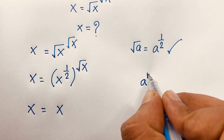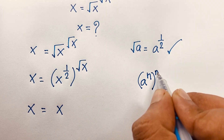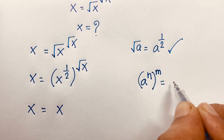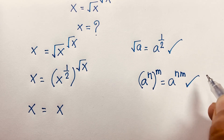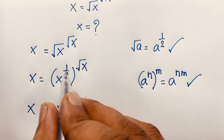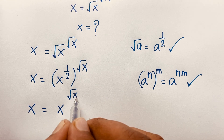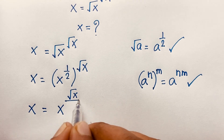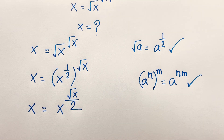We know that a to the power n, whole to the power m, is equal to a to the power nm. According to this law, you can see this expression: 1 over 2 times square root x gives square root x over 2. So we find out x is equal to x to the power square root x over 2.